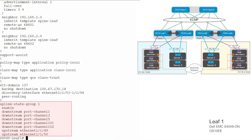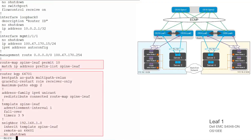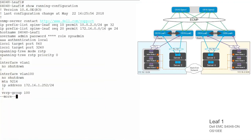Configure UFD — UFD shuts down specified downstream interfaces when all specified uplinks become disabled. Similar configuration is needed for BGP, route map, and IP prefix list.